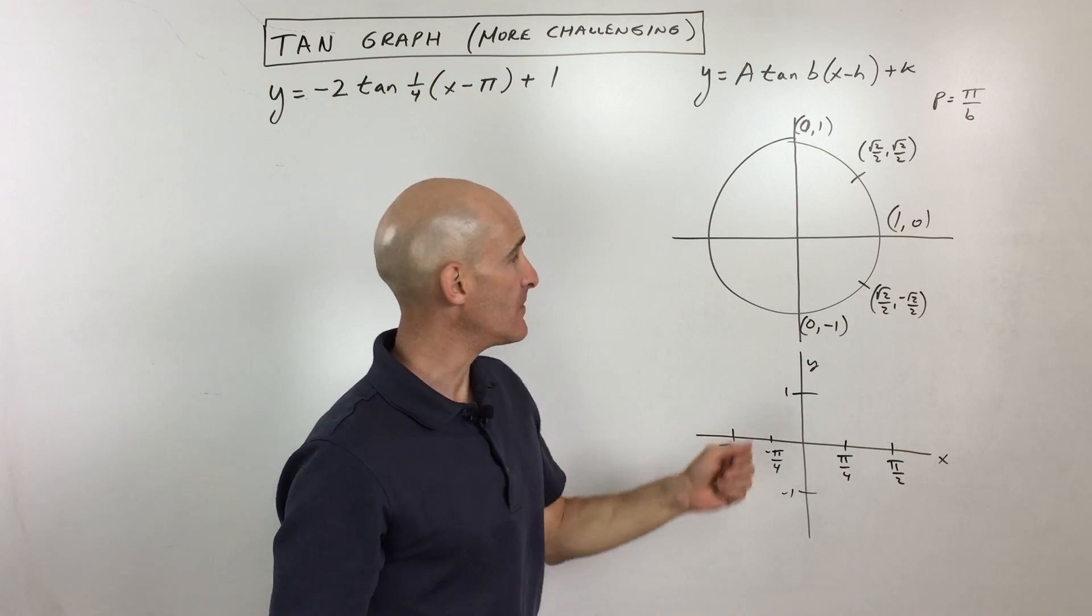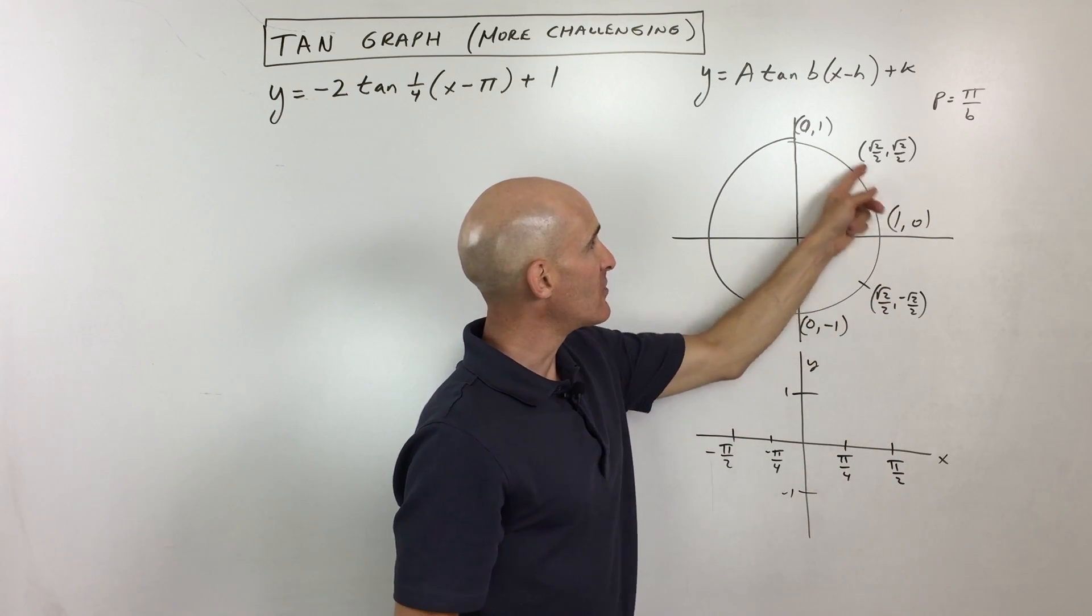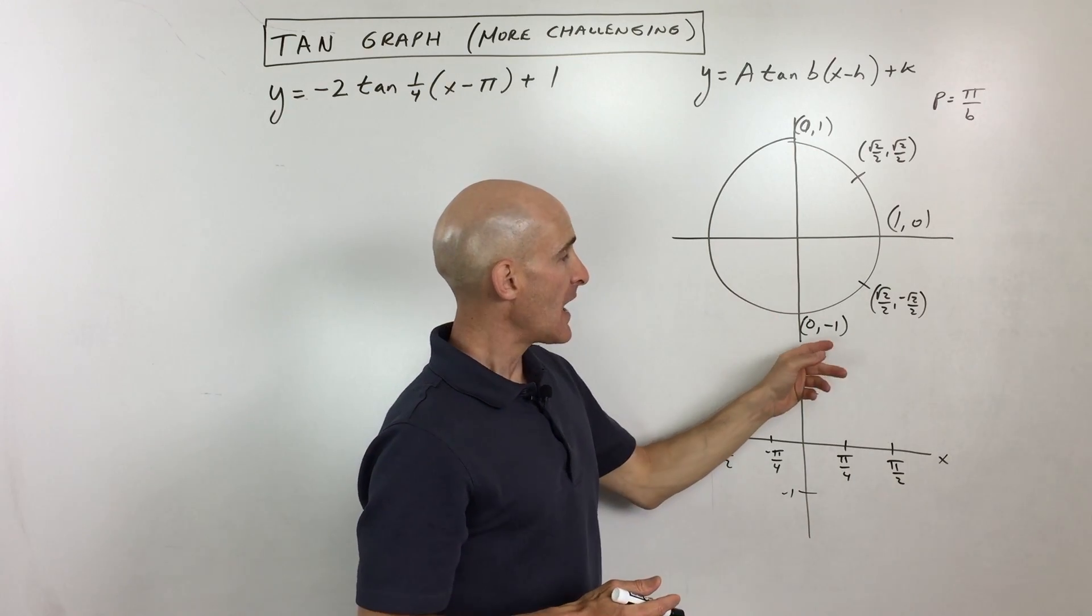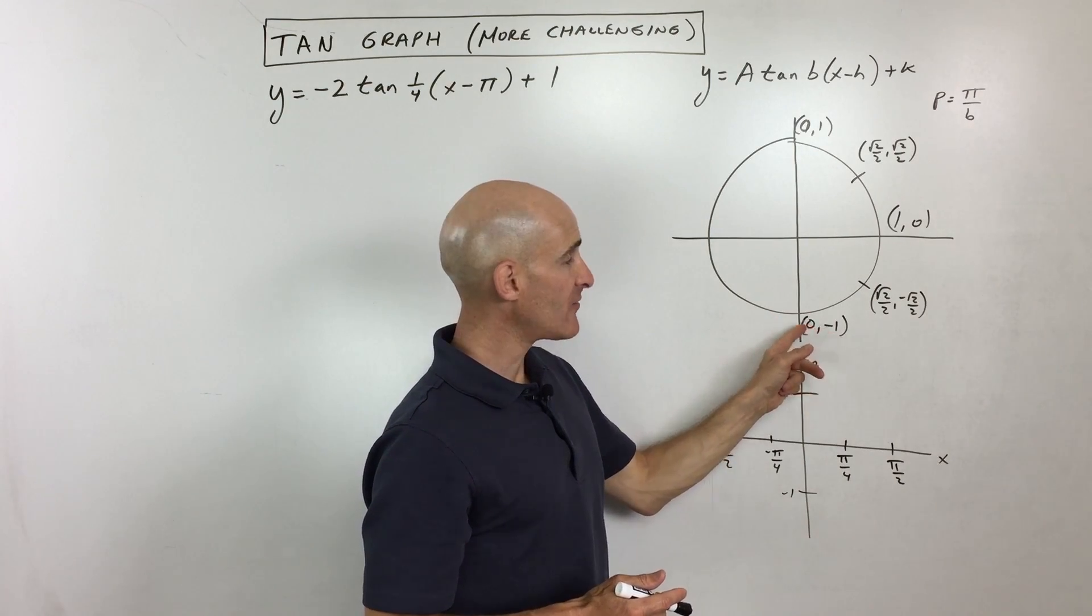Now when we graph tangent, we look at these key values from negative pi over 2 to positive pi over 2, so on our unit circle. And remember, tangent is the y value divided by the x value, y divided by x.